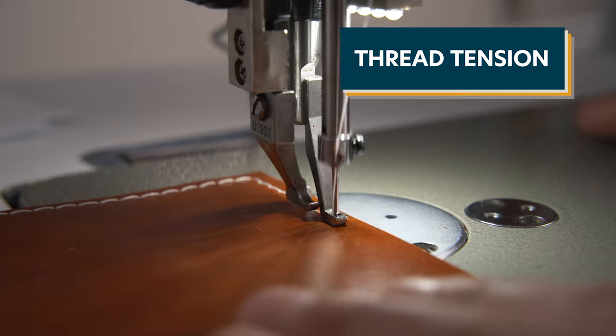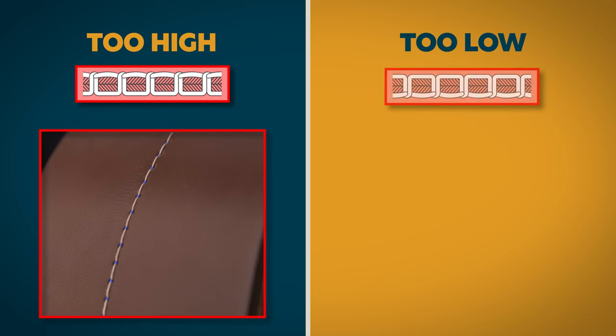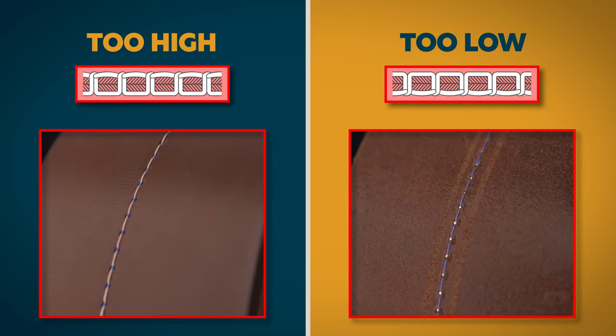Thread tension controls where the knot appears in your material. If your thread tension is too high, the knot may appear on top of your material, while low tension may cause the knot to appear on the underside of your material.